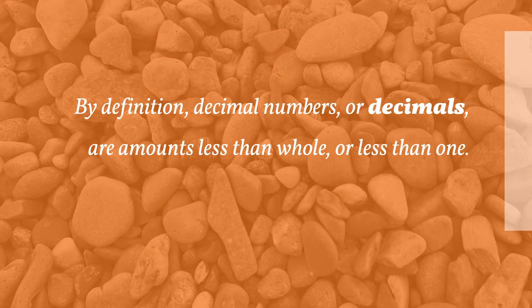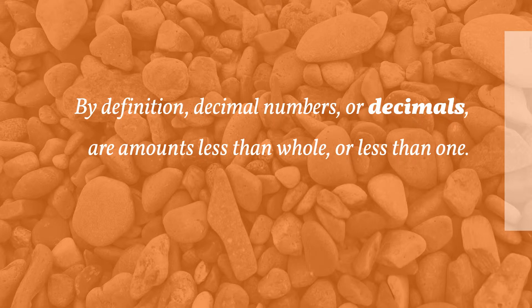By definition, decimal numbers or decimals are amounts less than a whole or less than one. They are preceded by a dot known as the decimal point and are written .31 or 0.31, for example. The zero is used to ensure that the decimal point is not missed.